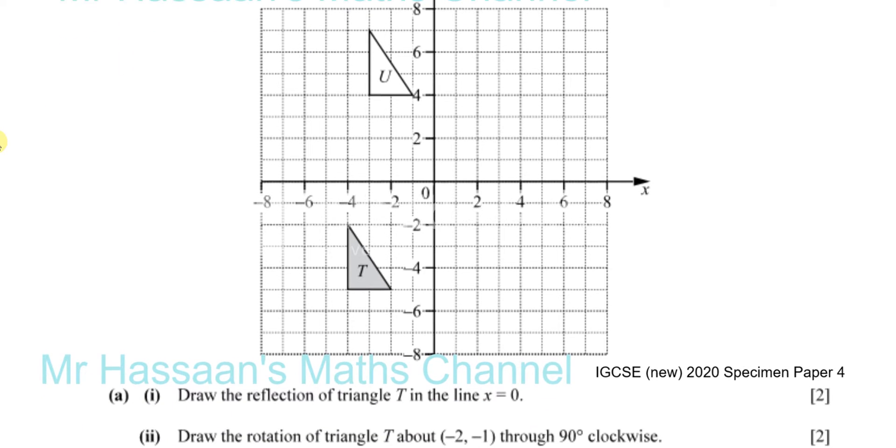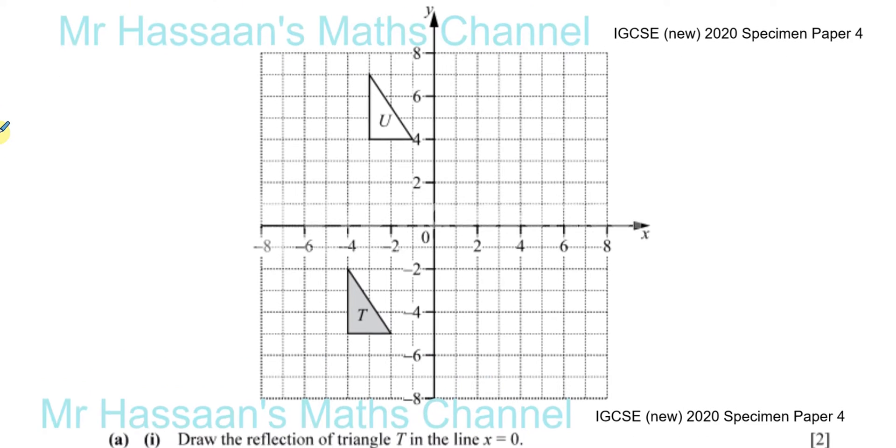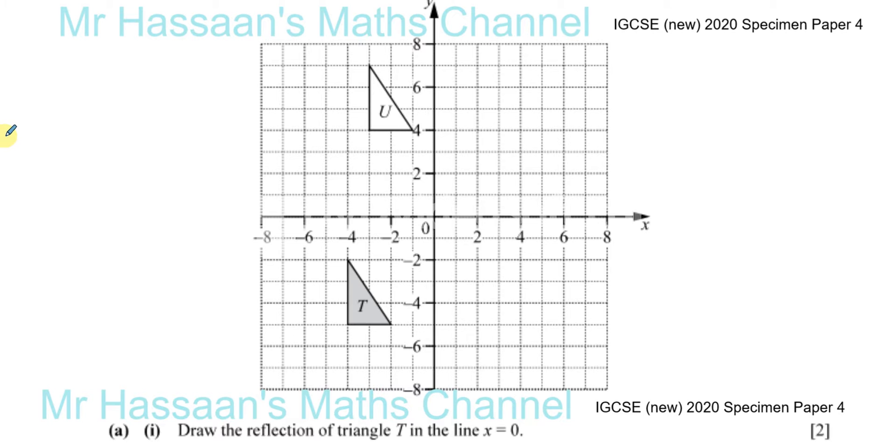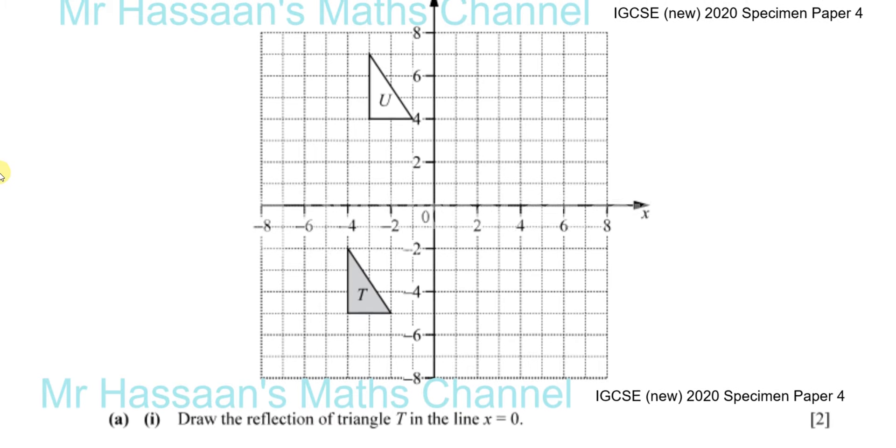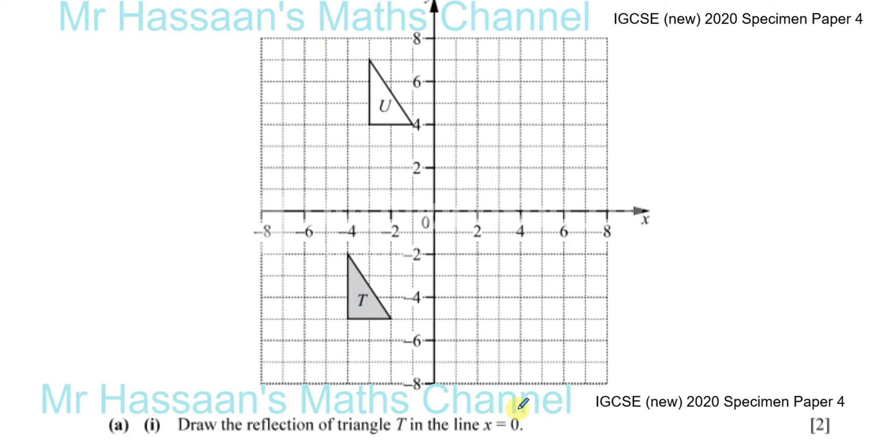Anyway, now we're asked, we've given this diagram here, just a grid with a couple of triangles drawn on them, U and T. And we are asked to first draw the reflection of triangle T in the line X equals zero.